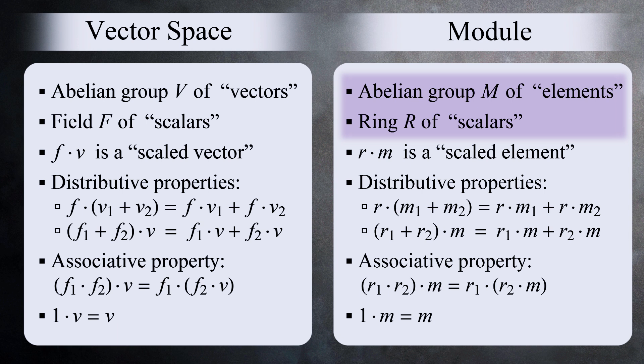For modules, you do not call the members of the group vectors. That term is reserved for vector spaces. Just use the word elements instead. And notice that we multiply by the scalars on the left? For this reason, you'll hear some people call this a left module. If you were to multiply by the scalars on the right, you would call it a right module.